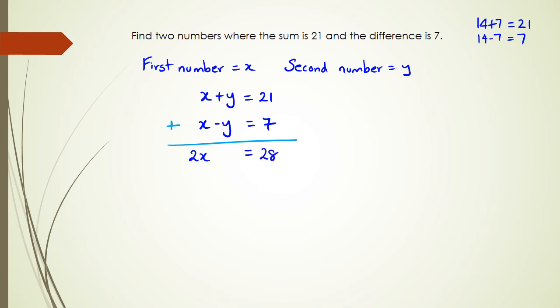Watch this: x plus x is 2x, y plus negative y, well that's zero. We just leave the equal sign on the same line as that. 21 plus 7 is 28, and so we've got 2x equals 28, so x equals 28 divided by 2, x equals 14.